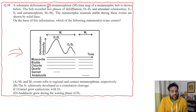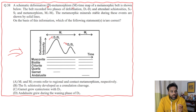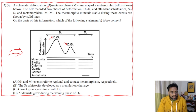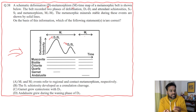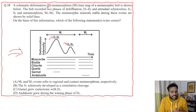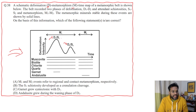The belt recorded two phases of deformation. As you can see, there are two phases of deformation D1 and D2, two phases of schistosities S1 and S2, and metamorphism M1 and M2. The S1 schistosity is related to D1 — the first deformation — and S2 is related to D2, which is the second deformation in time. M1 and M2 are two metamorphic phases.